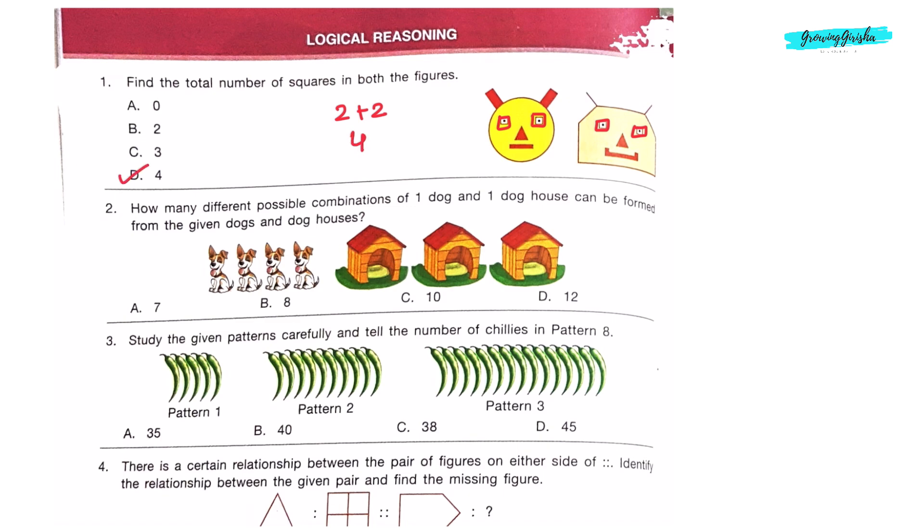Question 2: How many different possible combinations of 1 dog and 1 dog house can be formed from the given dogs and dog houses? There are 4 dogs and 3 dog houses. To find the different possible combinations we will multiply 4 and 3. 4 times 3 is 12. So 12 possible combinations can be formed. Option D is the correct answer.